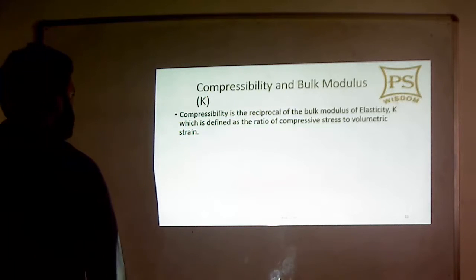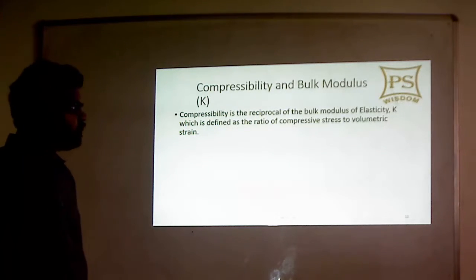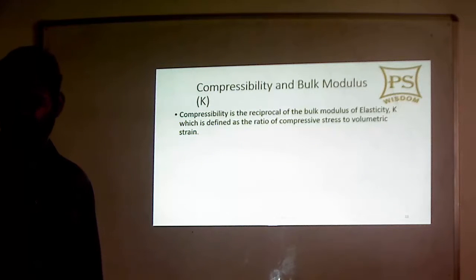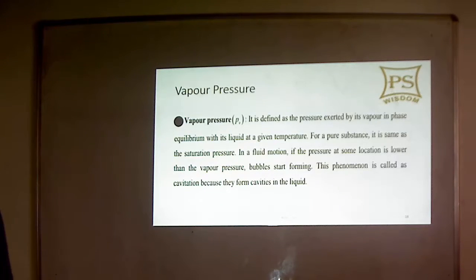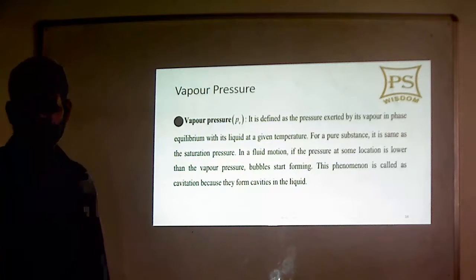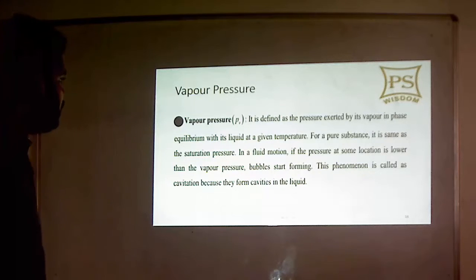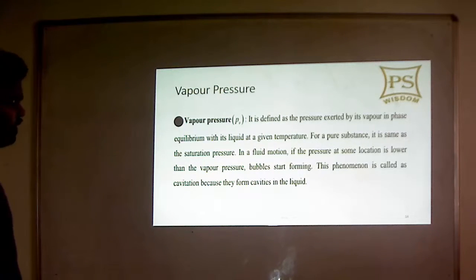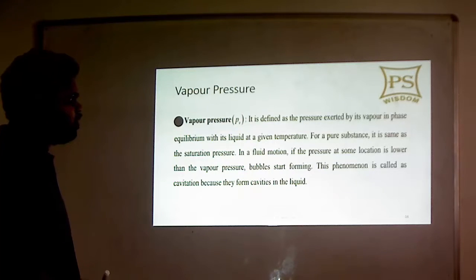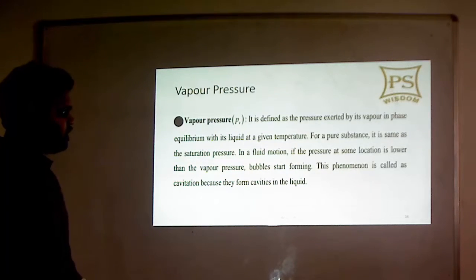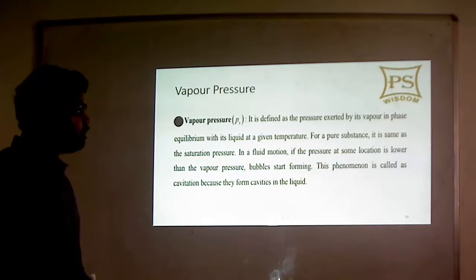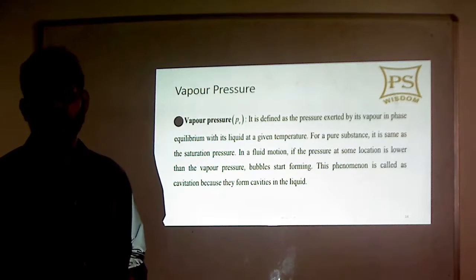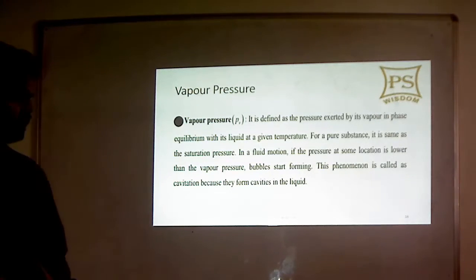Compressibility is the reciprocal of the bulk modulus of elasticity K, which is defined as the ratio of compressive stress to volumetric strain. Vapour pressure is defined as the pressure exerted by vapour in phase equilibrium with its liquid at a given temperature. For a pure substance it is the same as the saturation pressure. In fluid motion, if the pressure at a location falls below the vapour pressure, bubbles start forming — this phenomenon is called cavitation.